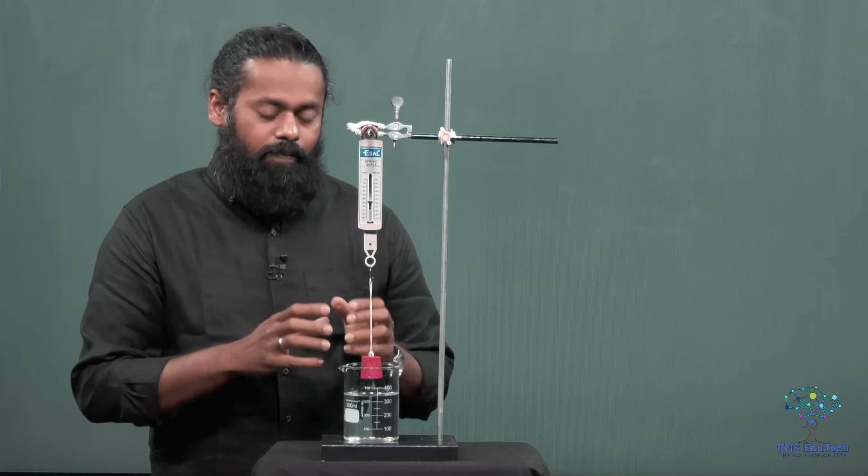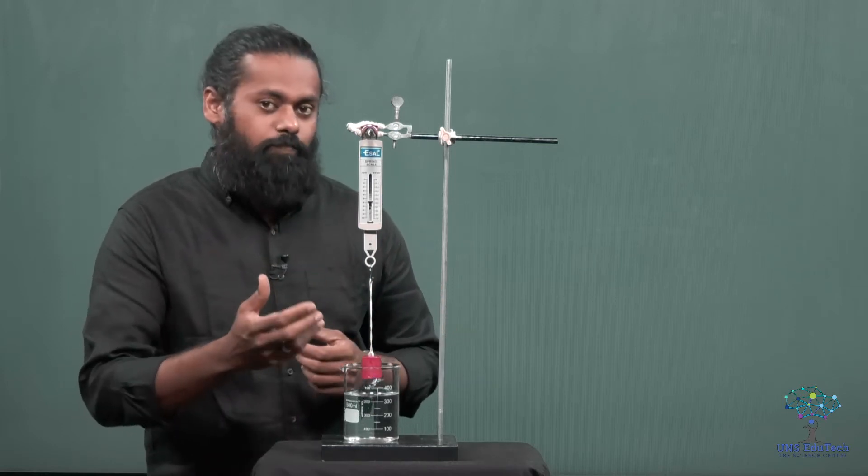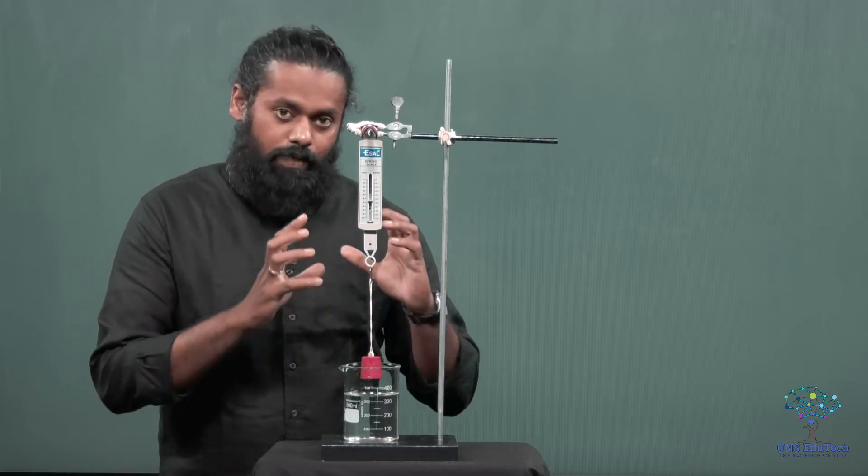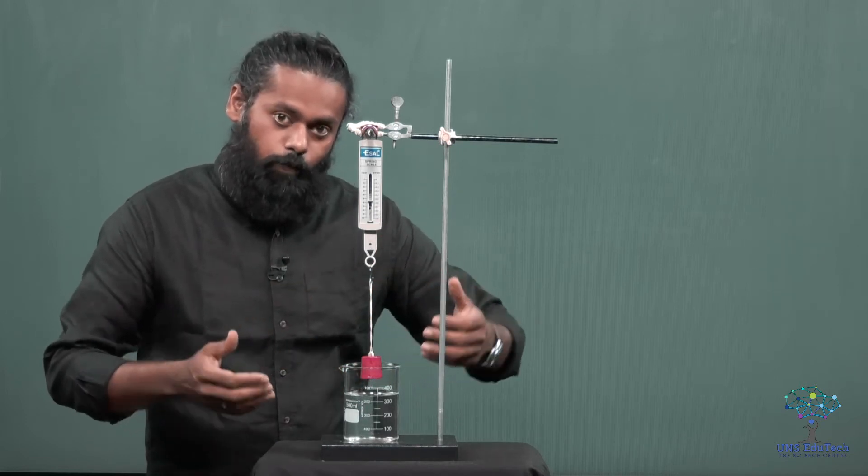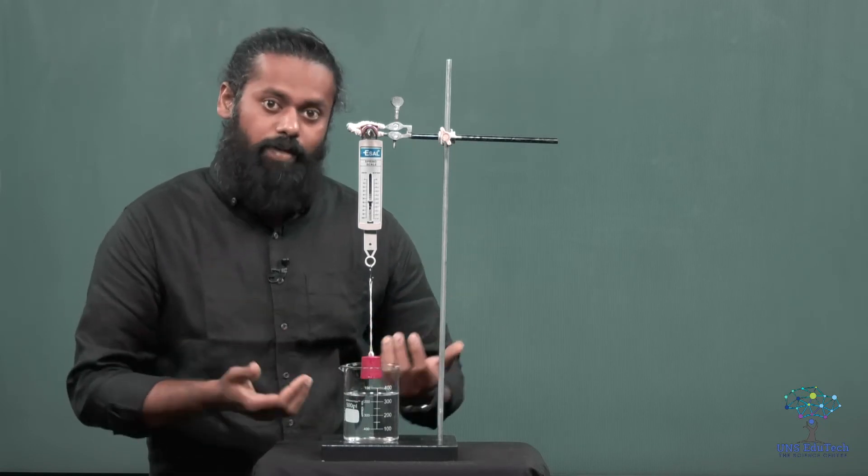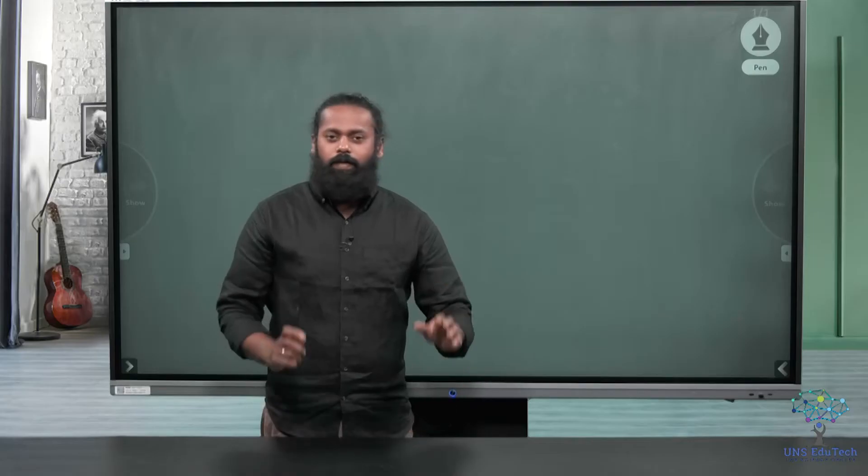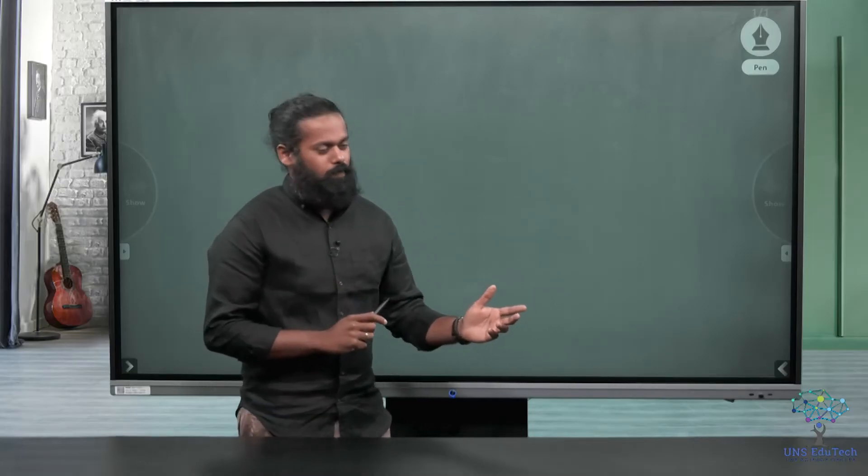So Archimedes principle is giving a connection between the weight reduction and the volume change. Archimedes principle says that the weight reduction happened is exactly equal to the weight of the volume displaced. So that principle will give you automatically the buoyancy force. How much will be the buoyancy force? Because exactly the buoyancy force will be equal to the weight reduction happened.